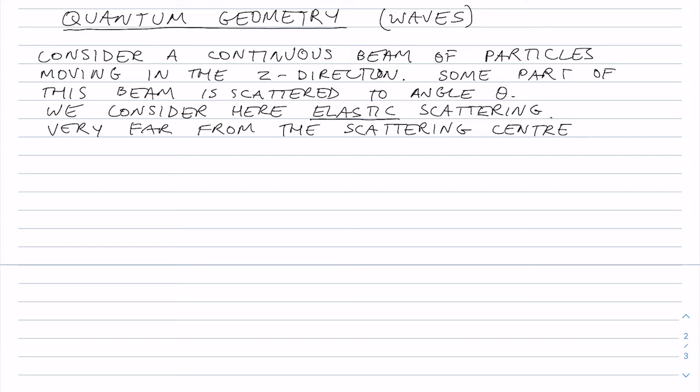So we've got a continuous beam of particles moving in the z-direction, and some part of the beam is scattered to an angle theta. And we're thinking about elastic scattering, so that the momentum of the scattered particle is not changed by the scattering. So now we can think about the wave function itself. We'll come back to inelastic scattering much later, in a few lectures' time.